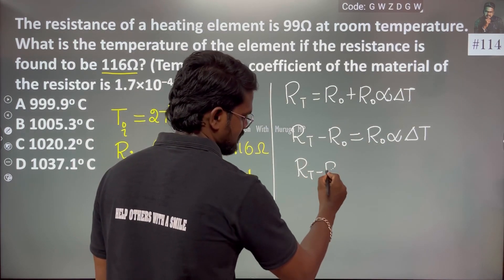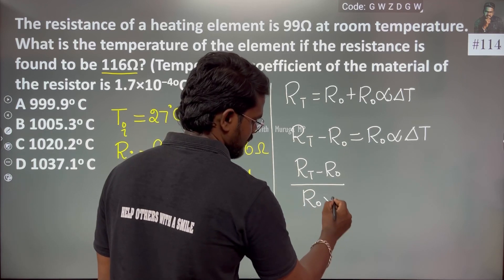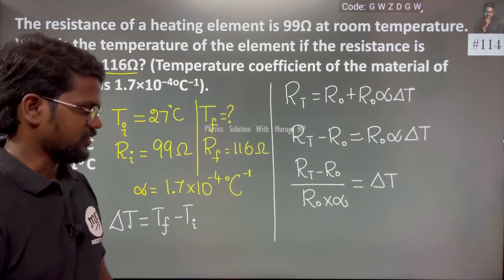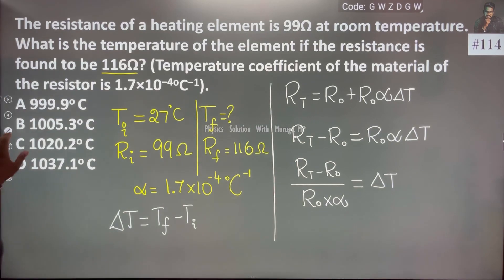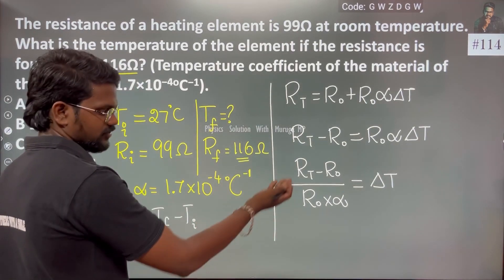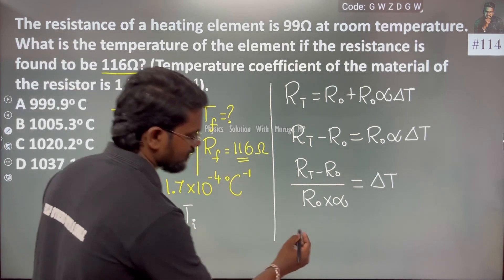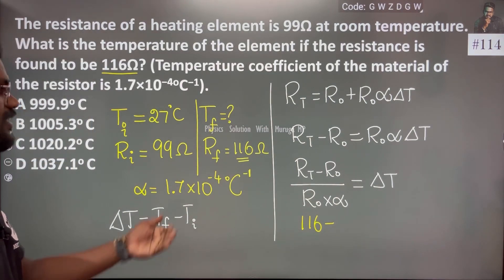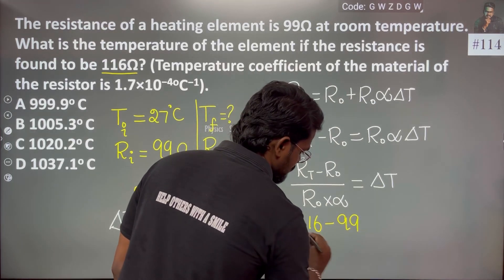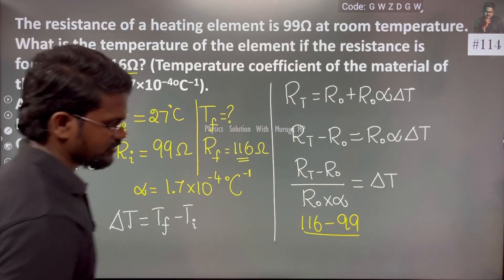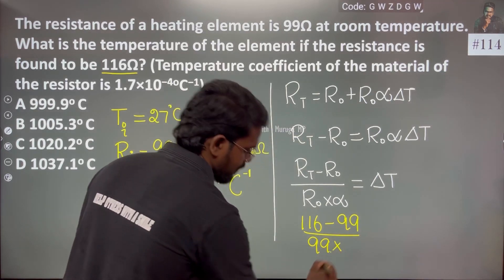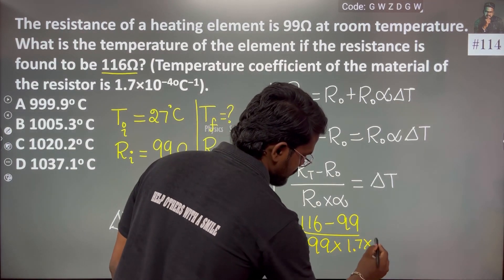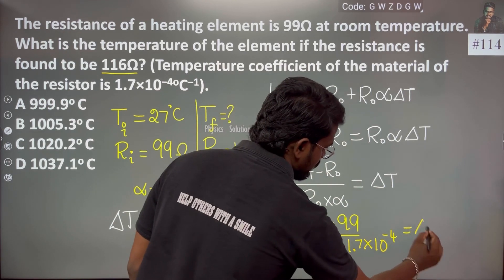Rearranging further: (Rt − R0) divided by (R0 × α) equals ΔT. Substituting values: (116 − 99) divided by (99 × 1.7 × 10 to the power minus 4) equals ΔT.